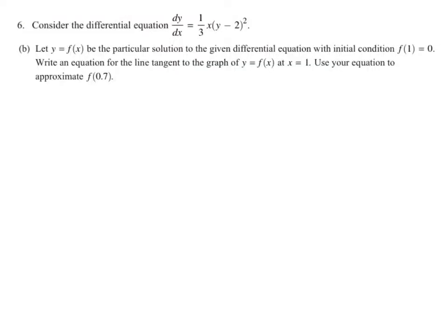All right. For part B, it says, let y equal f(x) be a particular solution to the given differential equation with the initial condition f(1) = 0. Write the equation of the line tangent to the graph of y = f(x) at x = 1. So I can see some students doing this. They see this. Oh, particular solution, I'm going to solve for y. Well, that's going to be somewhere in this problem, but it's not here. You've got to read the prompt. It says write the equation for the tangent line. So remember how to do a tangent line. We need a point and a slope.